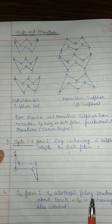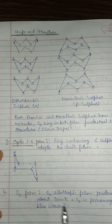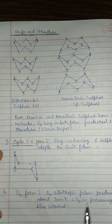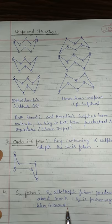The S2 allotropic form predominates above 1000 K. S2 is paramagnetic and blue in colour.